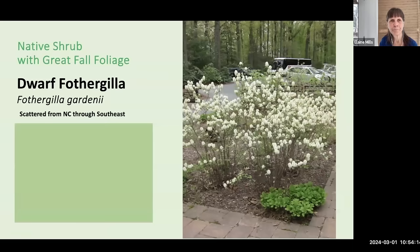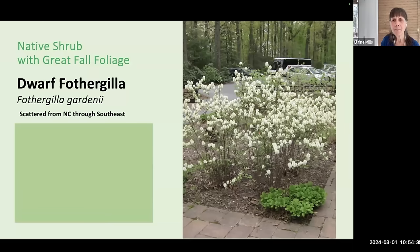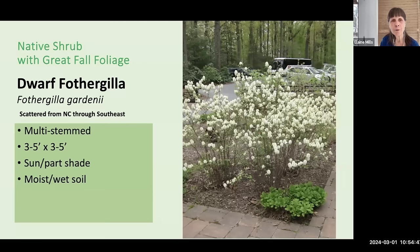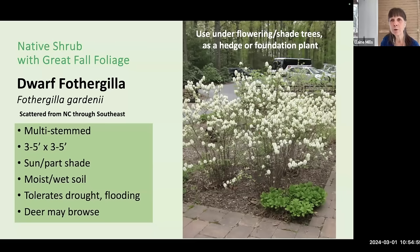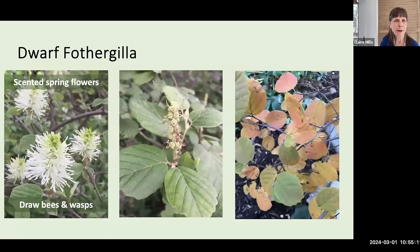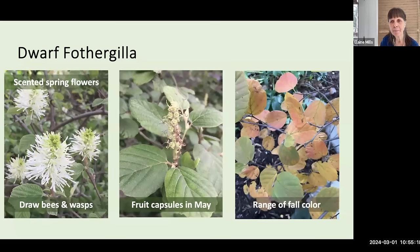Turning to a group of native shrubs with great fall foliage. The first is Dwarf Fothergilla, Fothergilla gardenii. It's actually more of a southeastern plant, but does grow well in the mid-Atlantic. Another multi-stemmed shrub, this one more diminutive at three to five feet tall, growing in sun to part shade and moist to wet soil, tolerating a range from drought to flooding. It's very attractive used under flowering or shade trees, or as a hedge or foundation plant. Dwarf Fothergilla has scented spring flowers looking like little bottle brushes that draw bees and native wasps. You'll see fruit capsules in May and then a lovely range of fall color.